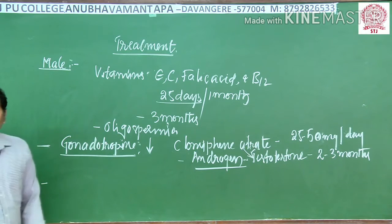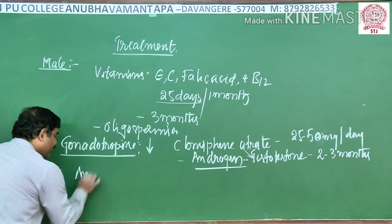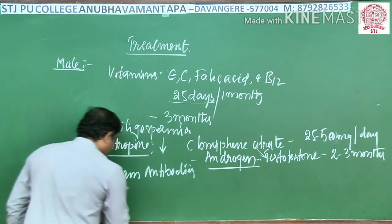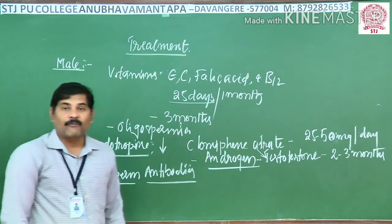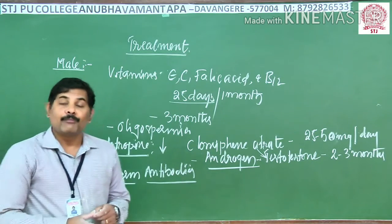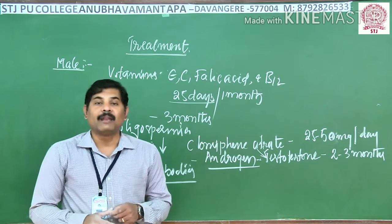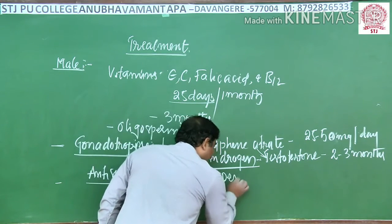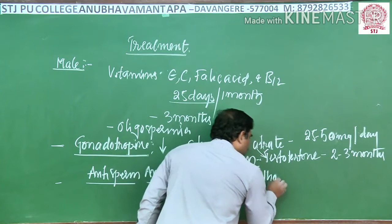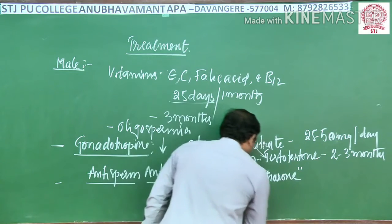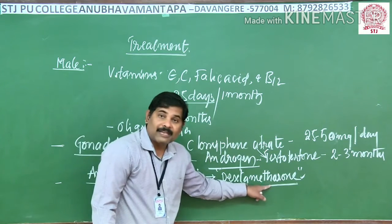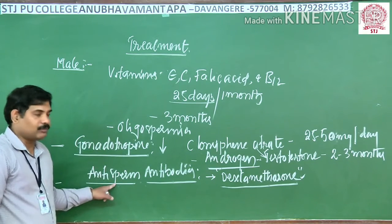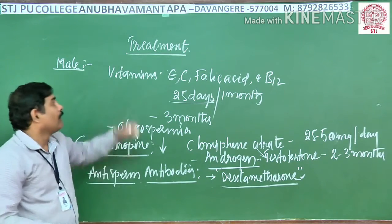Another problem in the male is anti-sperm antibodies. The semen of a male consists of antibodies like Immunoglobulin A, Immunoglobulin E, Immunoglobulin G, and Immunoglobulin M. This problem can be rectified by taking the drug Dexamethasone, which helps avoid the problem caused by these antibodies that act against the sperm. This is one more important treatment for infertility in a male.